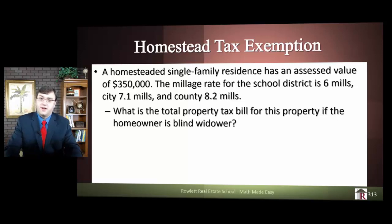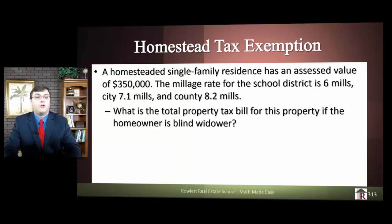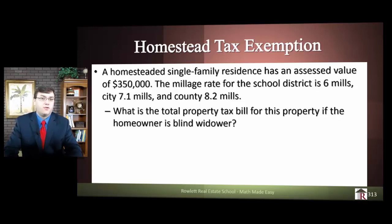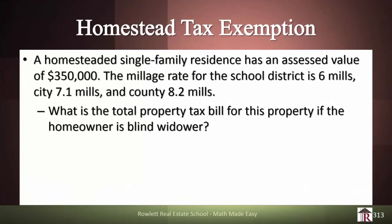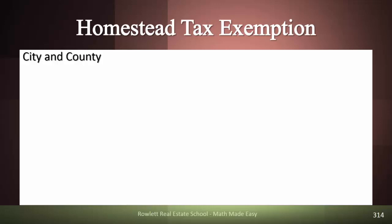Don't forget to look for your miniature exemptions — do any apply? The homeowner is a blind widower. These exemptions do stack, and a lot of students when they see 'blind widower' together only want to add $500 instead of $500 apiece for a total of $1,000 — $500 for blind and $500 for widower. Make sure you pay close attention to that.